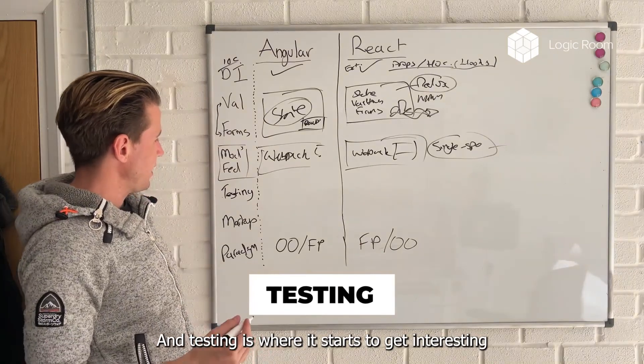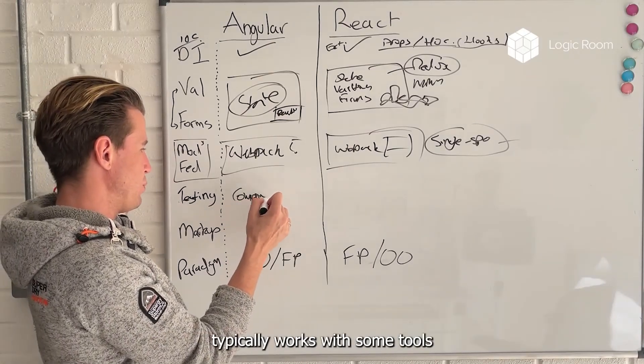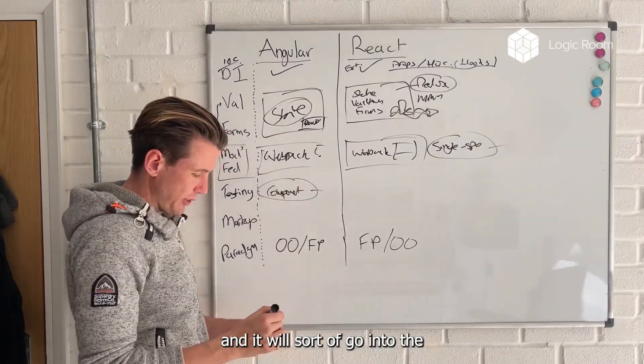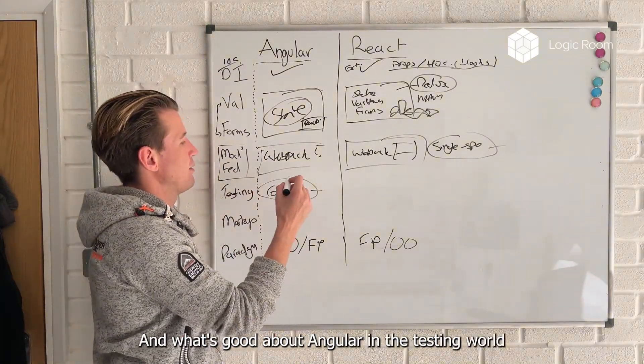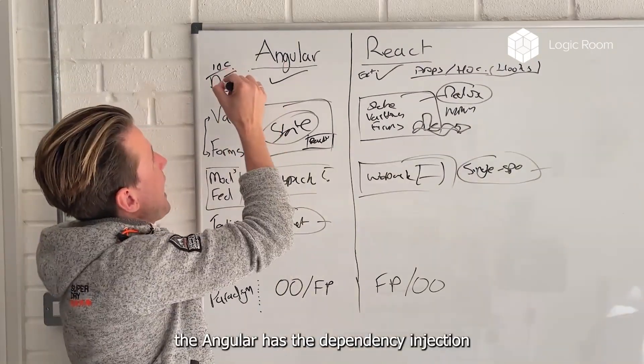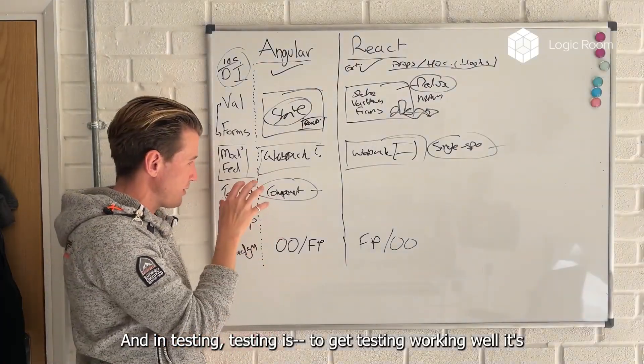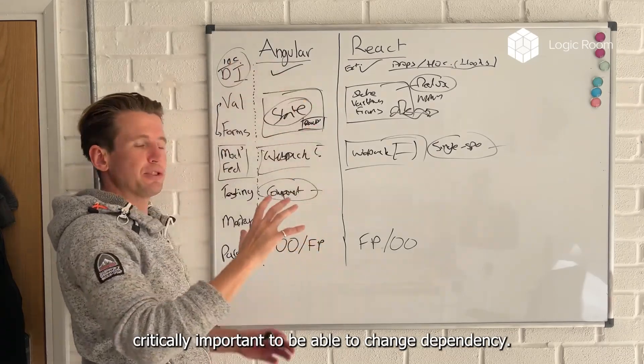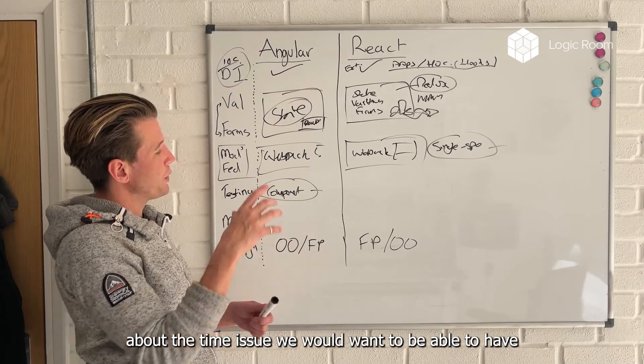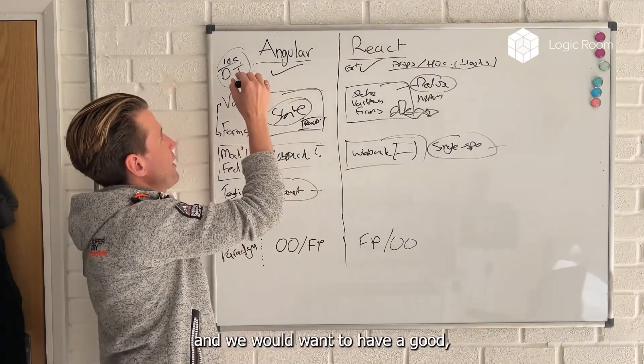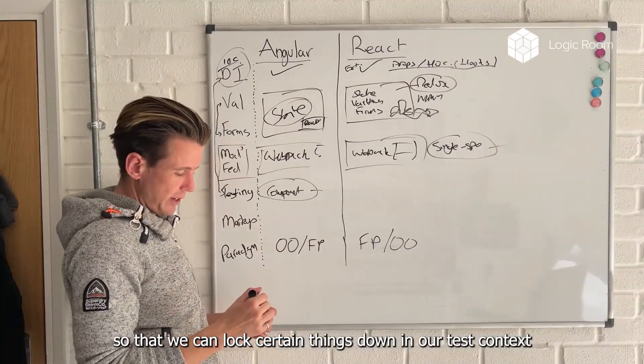Testing is where it starts to get interesting. Because in the Angular world, we've got testing built in. And the testing typically works with some tools that work at the component level. And it will go into the markup. And what's good about Angular in the testing world is that Angular has the dependency injection container built into it. In testing, to get testing working well, it's critically important to be able to change dependencies. So for example, like I said about the time issue, we would want to be able to have a close knitting between our testing and our injection container so that we can lock certain things down in our test context.